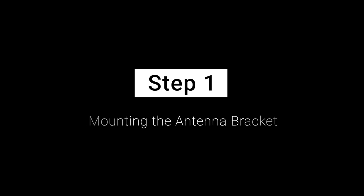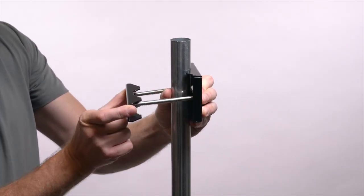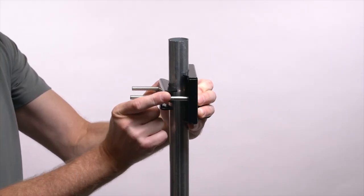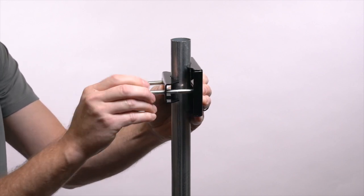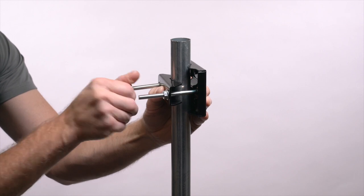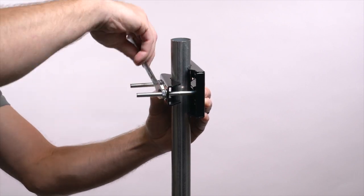Step 1: Mounting the Antenna Bracket. Clamp the U-bolt and the two parts of the mounting brackets around the mast or pole. Then, install the included half-inch nuts onto the U-bolt and tighten until the mounting brackets are secured to the mast or pole.